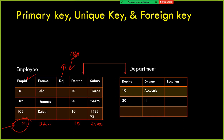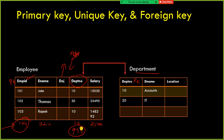Next is foreign key. Look here — this is a department table where department number is the primary key, and in the employee table the employee ID is the primary key. But in the employee table we also have a column called department number. The values in this department number column come from outside this table — they come from the department table. Whatever department number values are there in the department table, the same values should be here, though they can have duplicates.